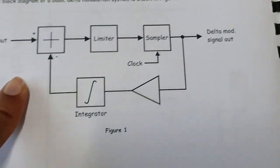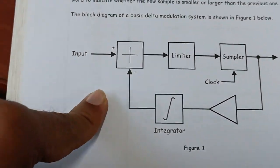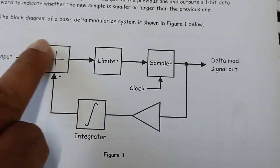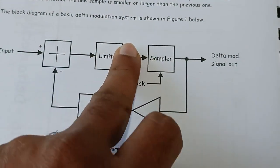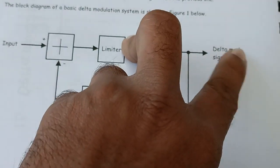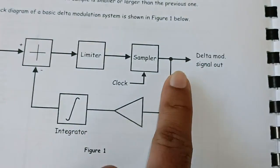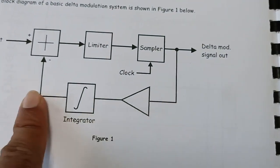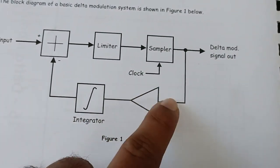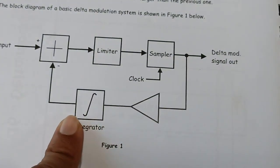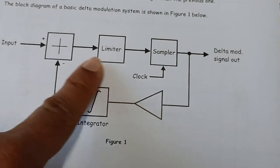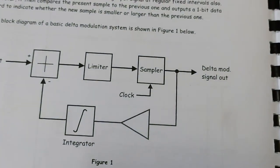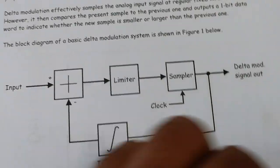This is the simple block diagram of delta modulation. The input goes through a limiter, then a sampler, giving the delta modulation output. After that there is a feedback path with a buffer, an integrator, a low pass filter, and then the output.